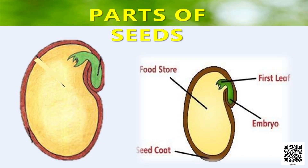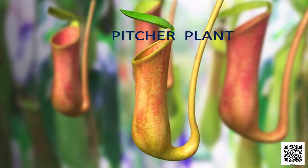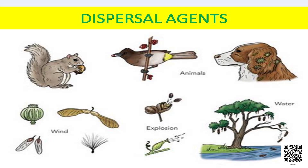What we read was about hunting plants, isn't it? Hunting plants like Venus trap, pitcher plant, and how do they make insects their prey? We also learned about dispersal of seeds and the different ways of dispersal.